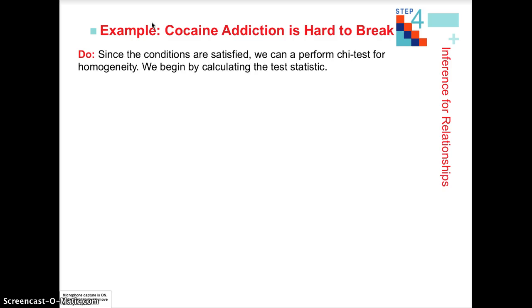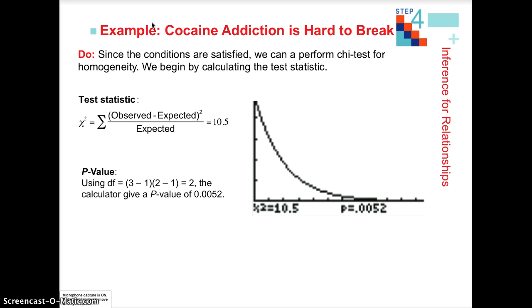Then we get to the do step. We expand our chi-square calculation. We can do this using the matrix feature in our graphing calculator. If you need to find how to do that, look at page 705, the technology corner — it describes in detail how to create the matrix of observed values, how to create the expected value matrix, and how to run the chi-square test. Once that's done, we calculate our chi-square value and the corresponding p-value.